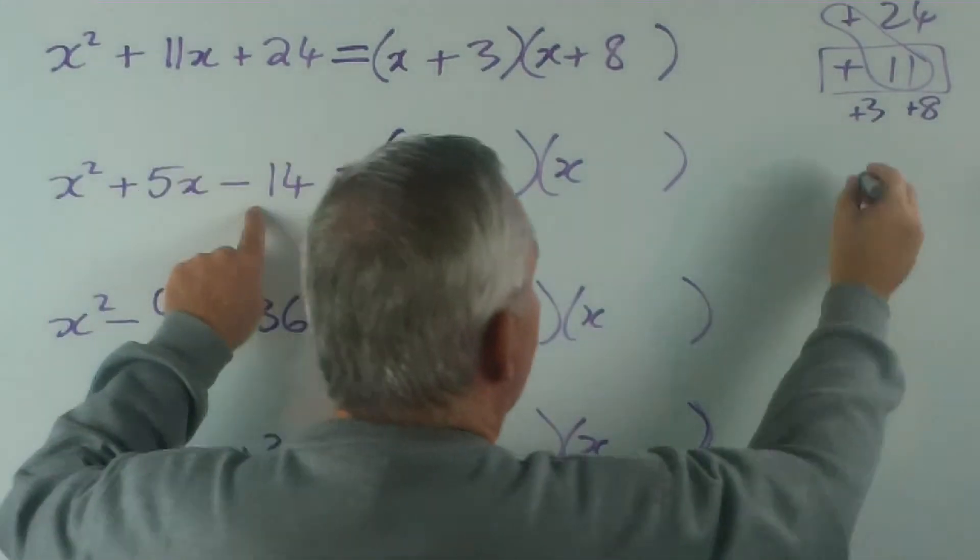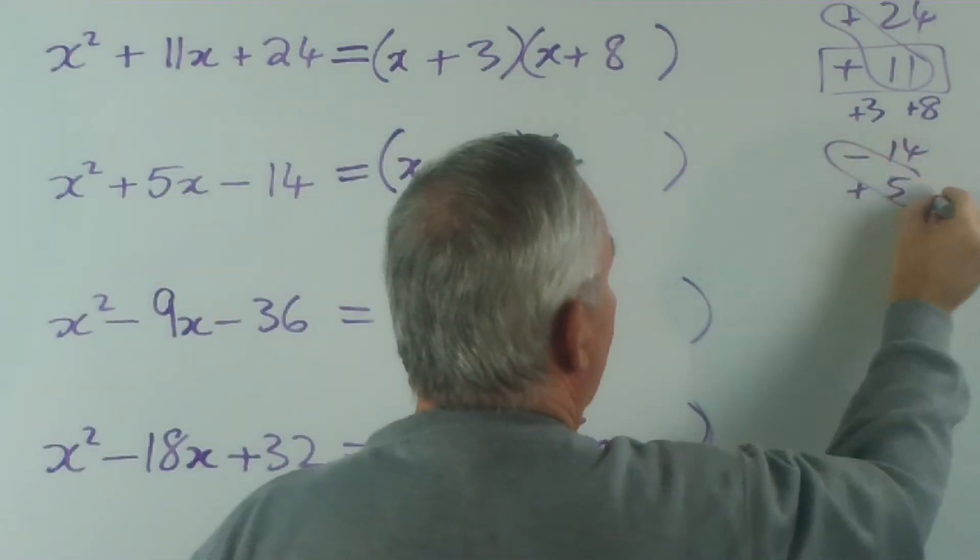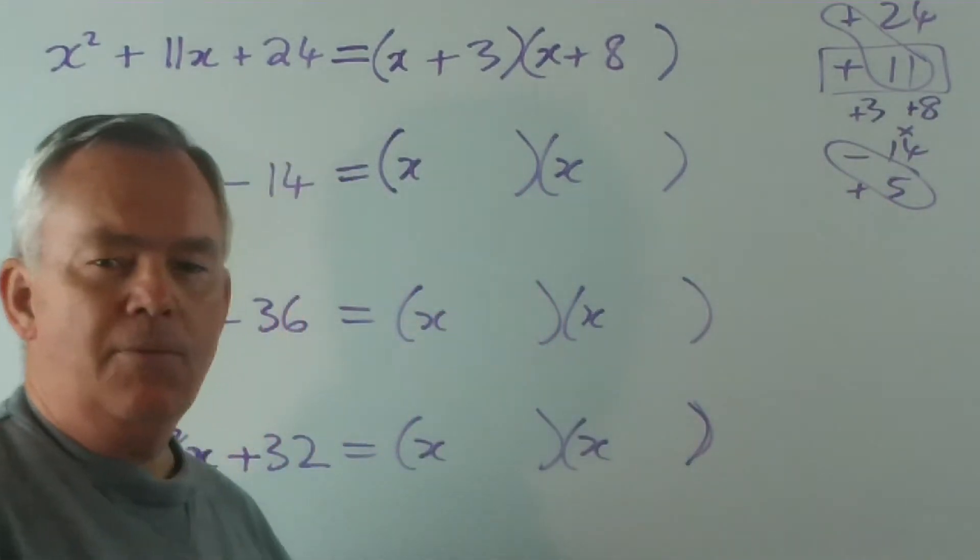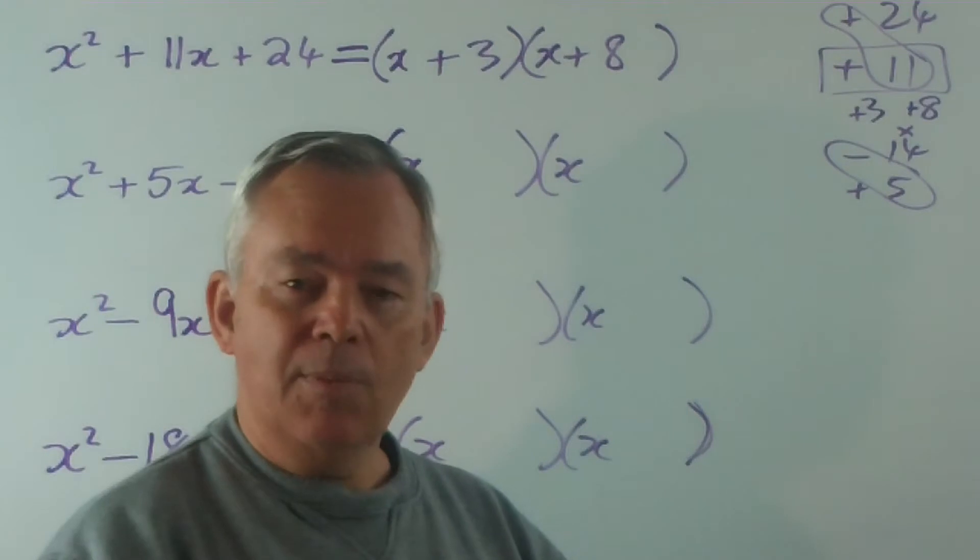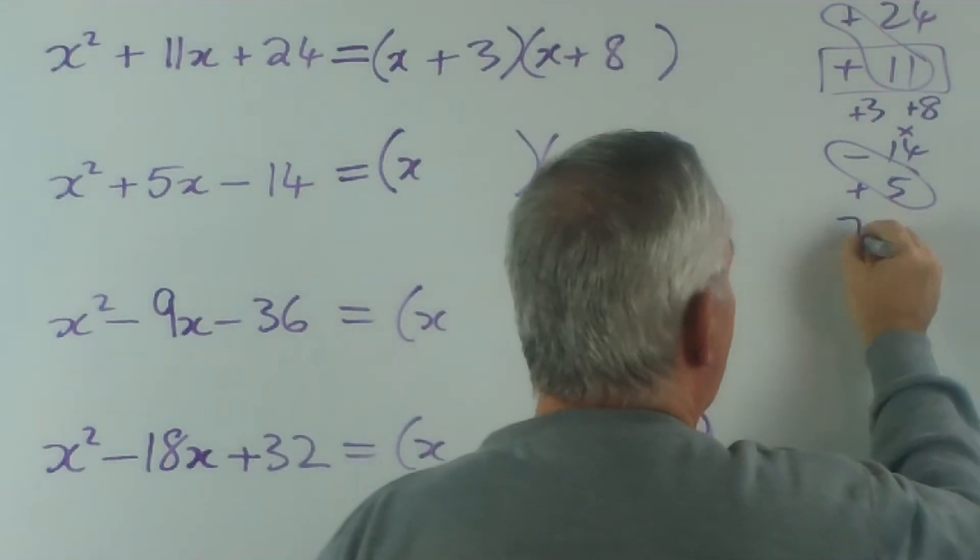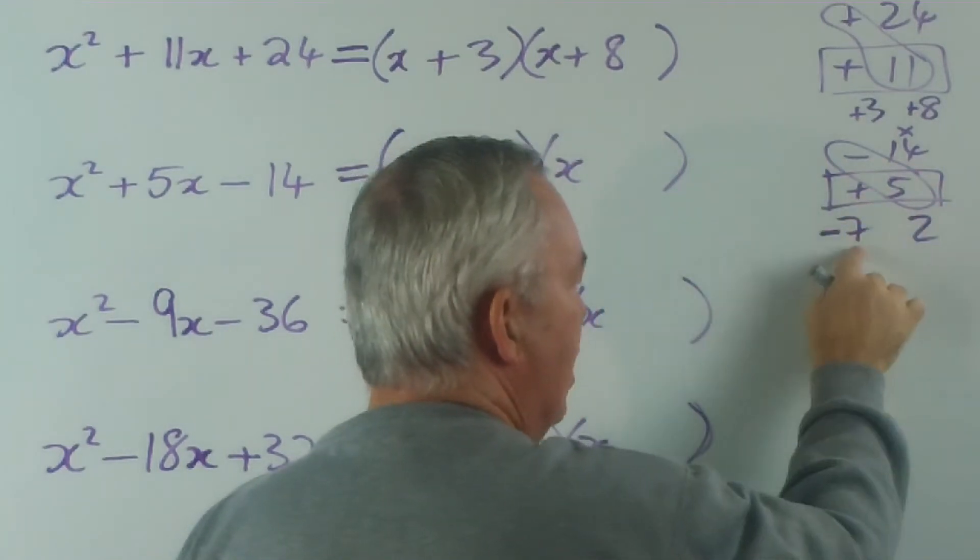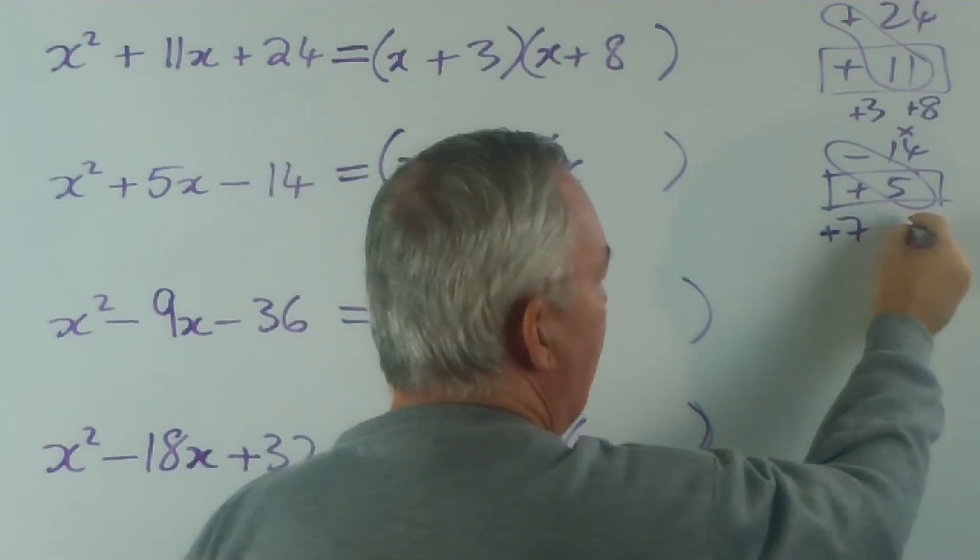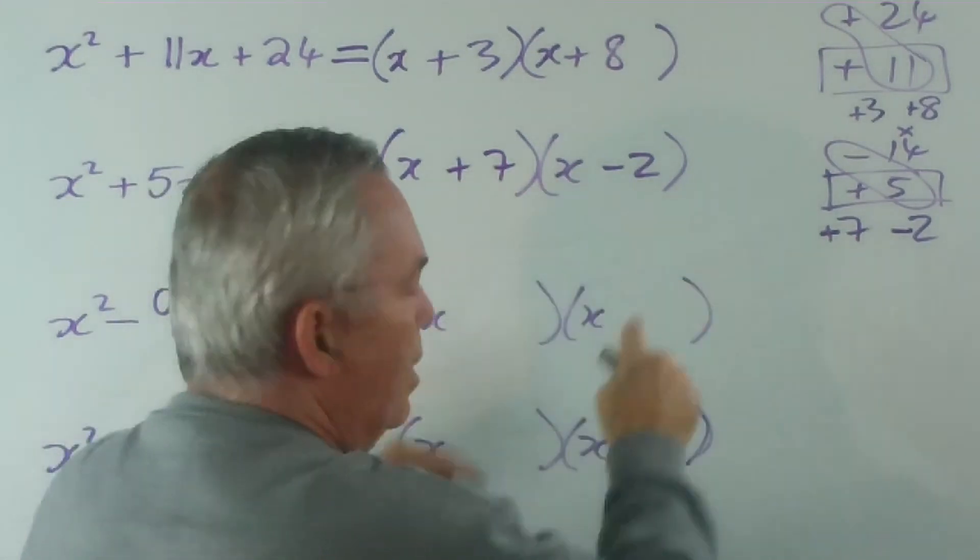This one, our product minus 14, our sum is plus 5. And we ask ourselves, what numbers multiply to make 14 that are 5 apart? Their difference is 5. What numbers multiply to make 14 that are 5 apart? Well, 14's easy because it's either 14 times 1 or 7 times 2. And 7 times 2, they're 5 apart. How do I get a plus 5? Well, because it's a positive number, the big number, the 7, must be positive. And how do I get to plus 5 from plus 7? I have to subtract 2. So it's plus 7 minus 2. It doesn't matter, by the way, which way these go in.